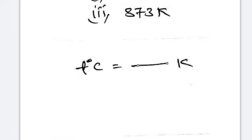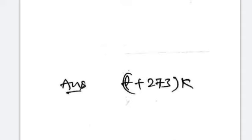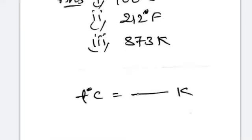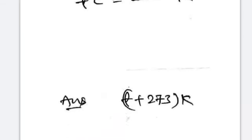The formula to convert centigrade to Kelvin: t degrees centigrade is equal to t plus 273 Kelvins.